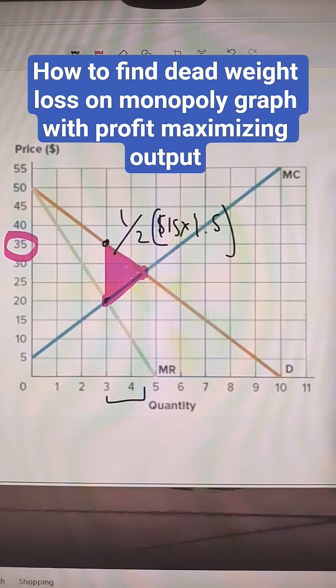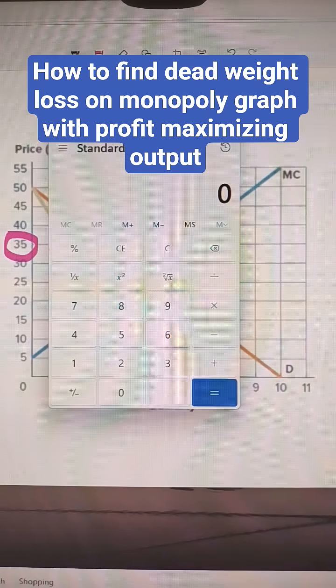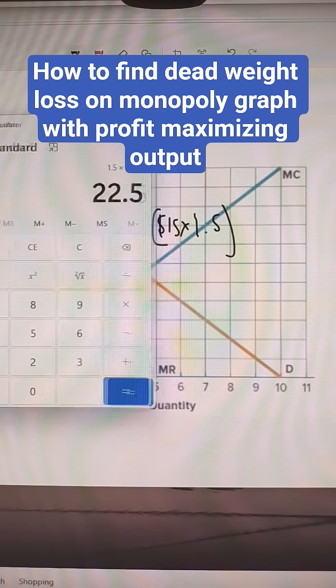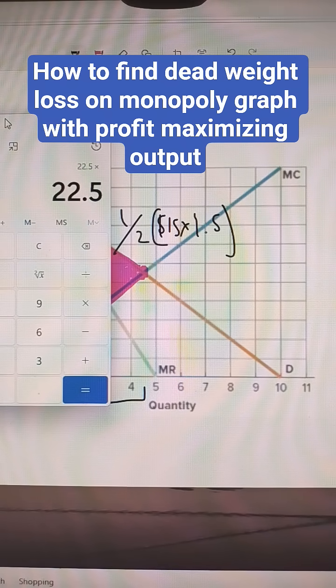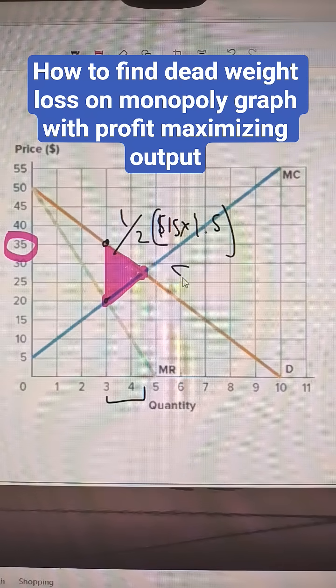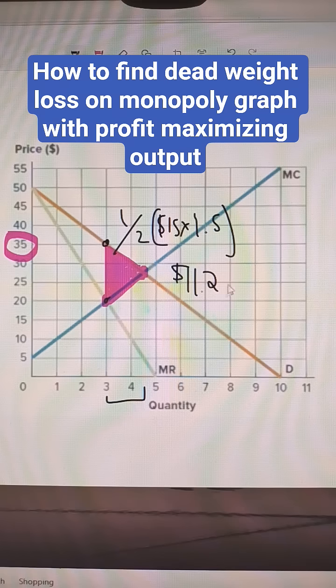We put that in the calculator. We get out our deadweight loss. So this is 1.5 times 15, that's 22.5, and then half of that is $11.25. So the deadweight loss for this is $11.25.